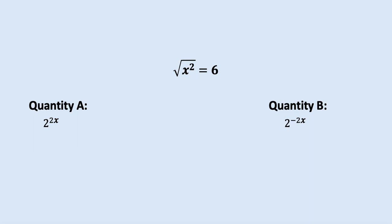Applying this to the GRE question: the final answer is a positive absolute value, but the initial x could be positive or negative. If x is positive, quantity A is greater because it has a positive power while quantity B has a negative power. If x is negative, quantity B is greater because quantity B will have a positive power and quantity A will have a negative power. So in the first case quantity A is greater, and in the second case quantity B is greater. That's why the answer is option D. I hope you found this video helpful — see you in the next video. Thank you.